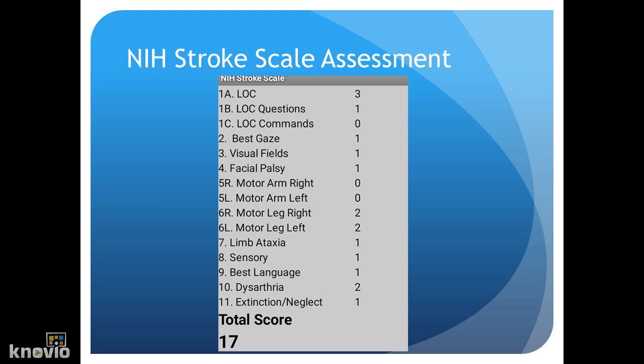Section 4 is facial palsy. If their face is symmetrical, they'll receive zero points. If they have a facial droop, they'll receive one or two points depending on the severity.